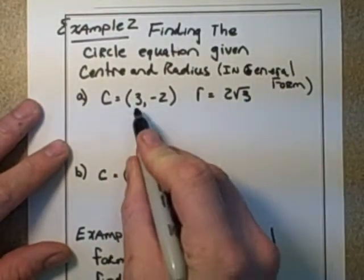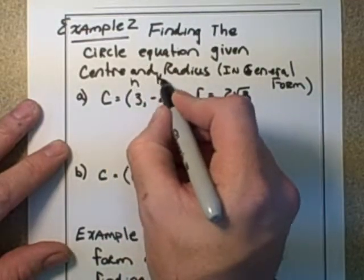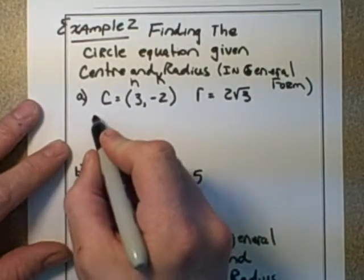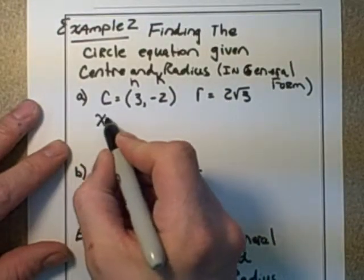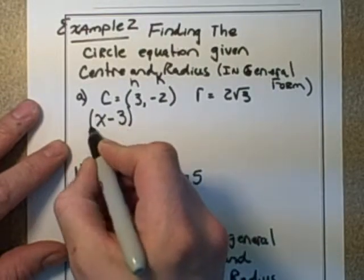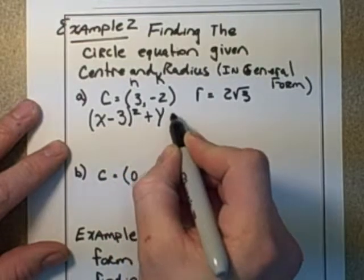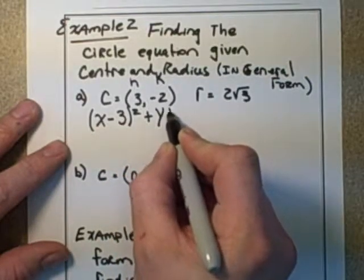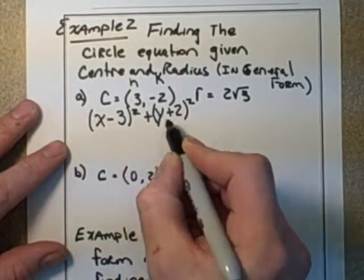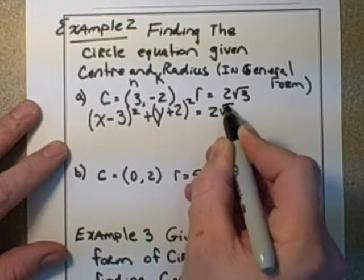And we plug in the numbers. So we know that h,k are these and that r is that. So we just plug it in. So we go x-h, which would be -3 all squared, plus y minus -2. So minus minus 2 would be +2 all squared, and then equals (2√3)².